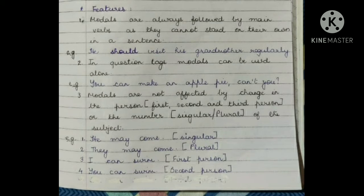Now let us see the main features of using a modal in a sentence. The first feature is that in every sentence, the modal is always followed by the main verb, because the main verb shows us the action. For example: 'He should visit his grandmother regularly.' Here the modal auxiliary is 'should' and the main verb is 'visit', which comes after the auxiliary verb.